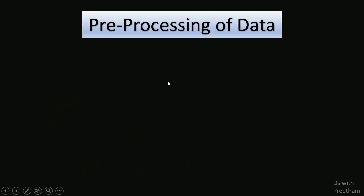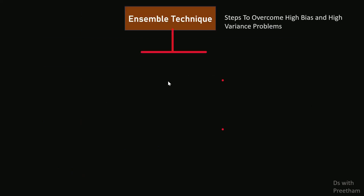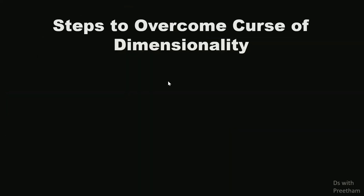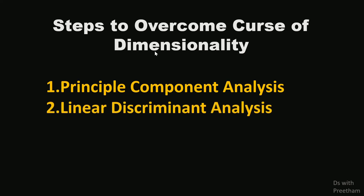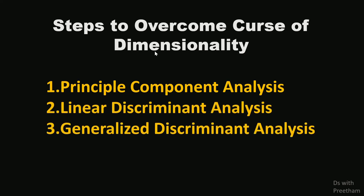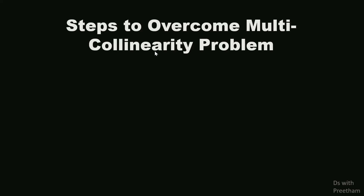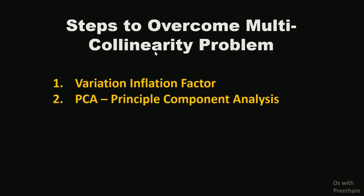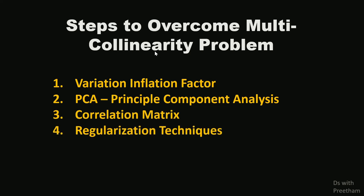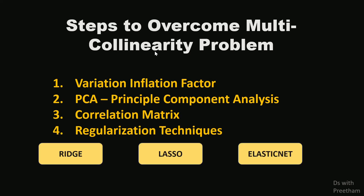If you look at the overfitting problem, what is the solution? If you look at high bias and high variance, what is the solution? If you look at the curse of dimensionality, what is the solution? The solution includes VIF — Variation Inflation Factor — PCA, correlation matrix, and regularization techniques. Similar to DNN, in the regularization process it includes Ridge, Lasso, and Elastic Net.